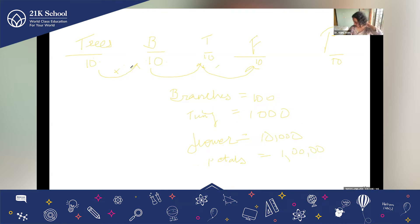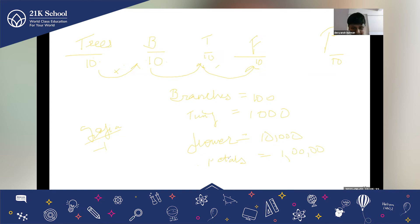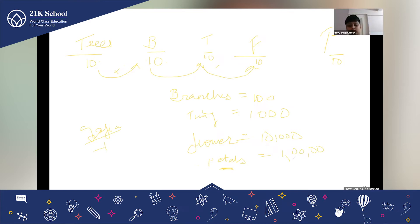Now I need Devian to tell me — that girl Sophia who came, what did she do? She took one branch, she took one twig, one flower. What is the last thing that she did? Petals. So how many petals did she take? One. She took one petal.